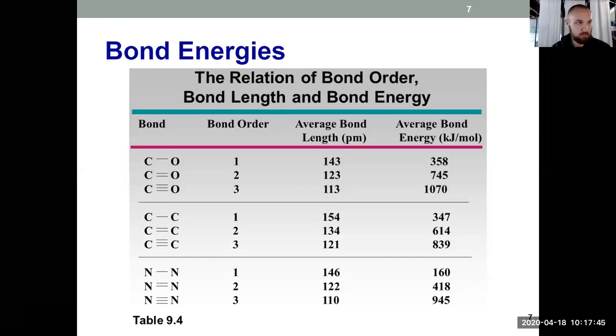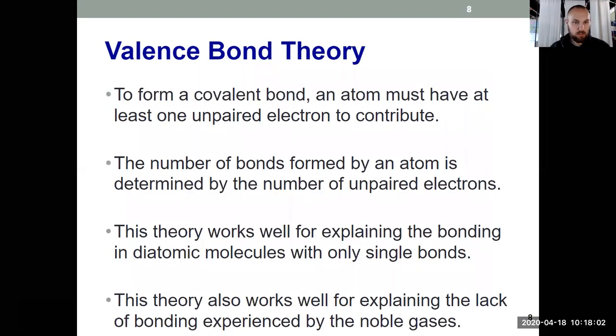Other information that we need to bring forward from Chapter 6, still just previous knowledge, which we can get from this table. As bonds get higher in order, so as we go from single to double to triple, bonds get stronger, of course, and they also get shorter.